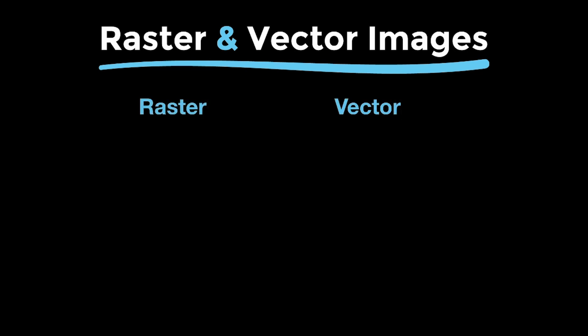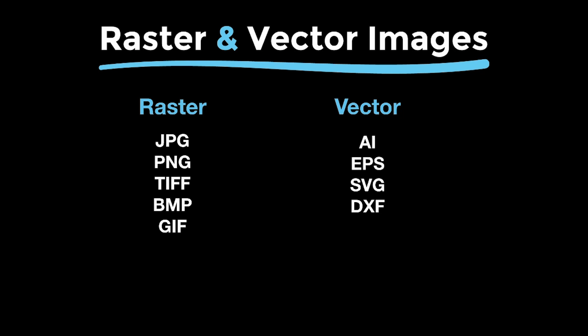First, we'll go over the raster and vector file types. For raster, these are usually file types like JPEG, PNG, TIFF, BMP, and GIF. And for vectors, we're usually talking about AI, EPS, SVG, and DXF.